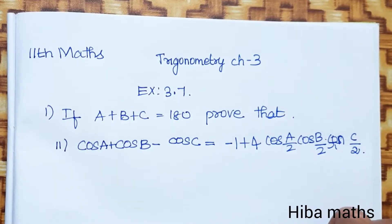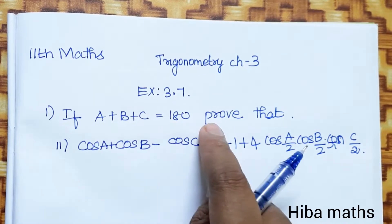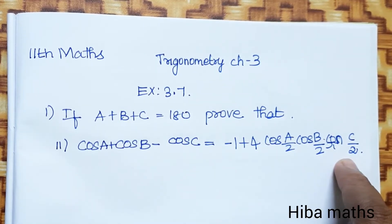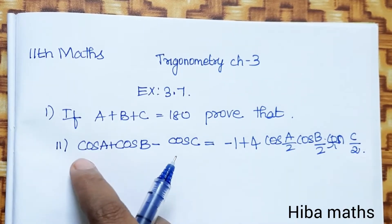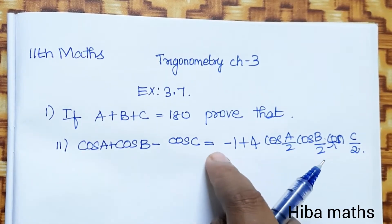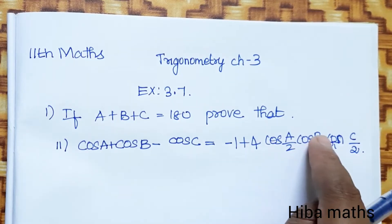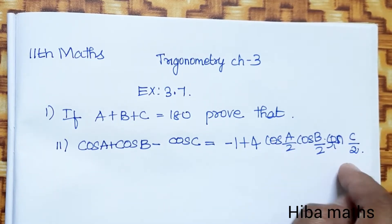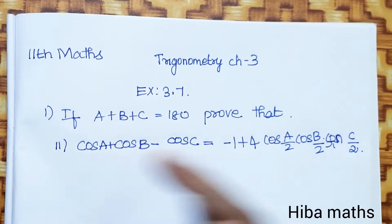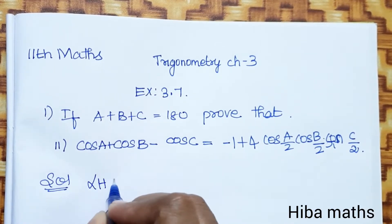Hello students, welcome to Hiba Max 11 Standard Max, Chapter 3 Trigonometry, Exercise 3.7. First question: if A plus B plus C is equal to 180, prove that cos A plus cos B minus cos C is equal to minus 1 plus 4 times cos(A/2) cos(B/2) sin(C/2). We will solve the LHS and prove the RHS. In the solution, first we take the LHS part.